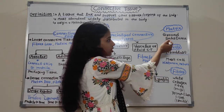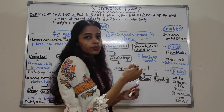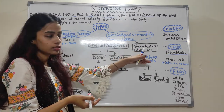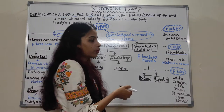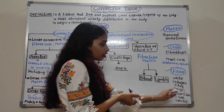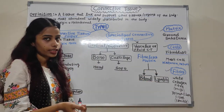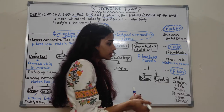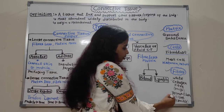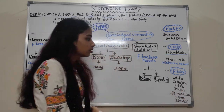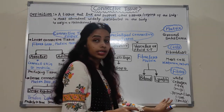Matrix is a ground substance present in Connective Tissue. The cells present include Fibroblasts and Mast Cells. Fibroblasts make Collagen Fibers, while Mast Cells secrete Histamine, Heparin, and Serotonin. Regarding Fibers, there are two types: white collagen fibers, which are tough, and yellow elastic fibers, which are flexible.